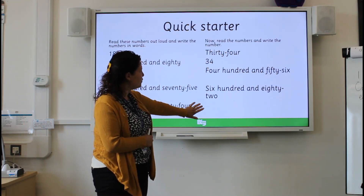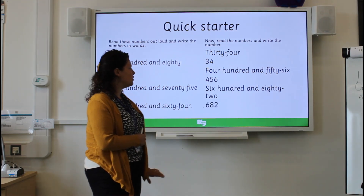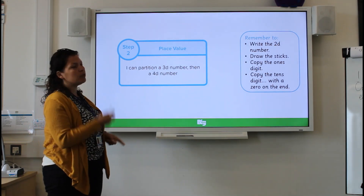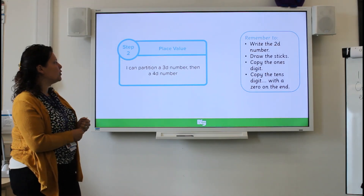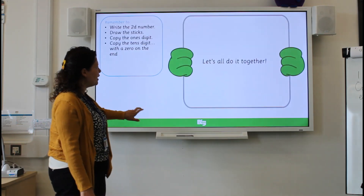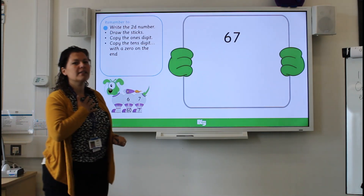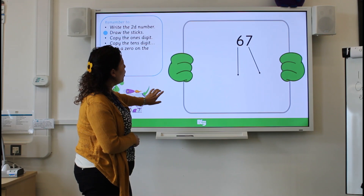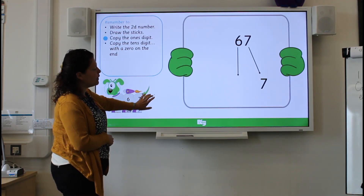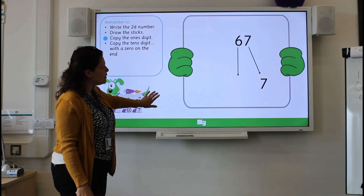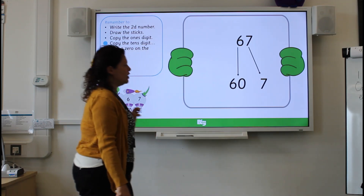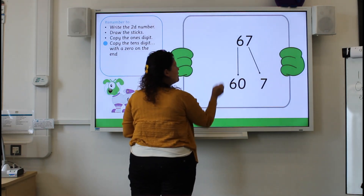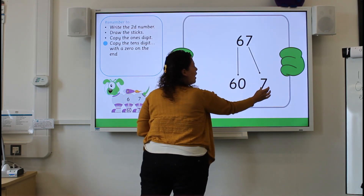Well done, let's check your answers: we've had 34, 456, and 682. For this session's learning we're going to learn to partition. I'm going to start with two-digit numbers and then we'll move on to three-digit and four-digit numbers. Here's our first number: 67. That's a two-digit number because we've only got two digits. We're going to draw the sticks — six tens and seven ones — and so 67 partitions into 60 and 7.